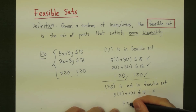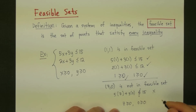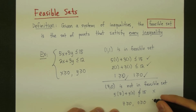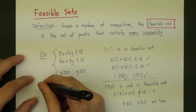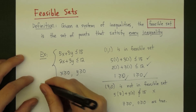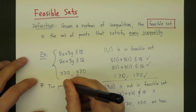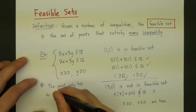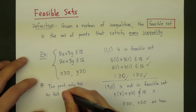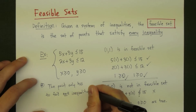Even though, if we try the last two inequalities, 7 for x is greater than or equal to 0, and 0 is greater than or equal to 0 — both of those are true — it doesn't matter. It fails one inequality, therefore it's not in the feasible set. This is the key point: a point only has to fail one of the inequalities for it to not be in the feasible set.